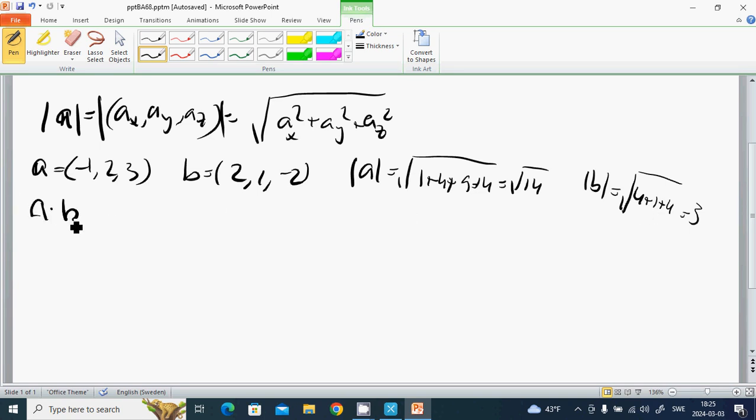a·b equals (-1)(2) + (2)(1) + (3)(-2) = -2 + 2 - 6 = -6.